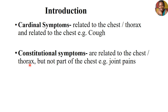For clarification: cardinal symptoms are those directly happening within our respiratory system. Constitutional symptoms, on the other hand, are symptoms that are happening in other parts of the body but are related to the chest or to respiratory conditions. And this is the main purpose of this class — we are going to explore all these symptoms one by one.